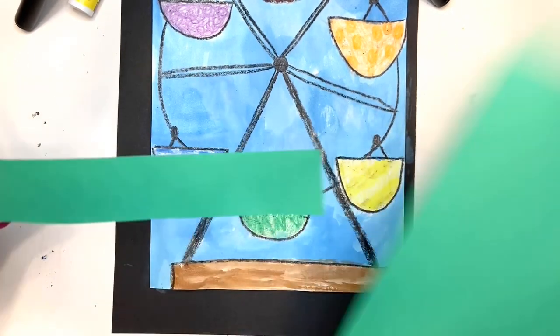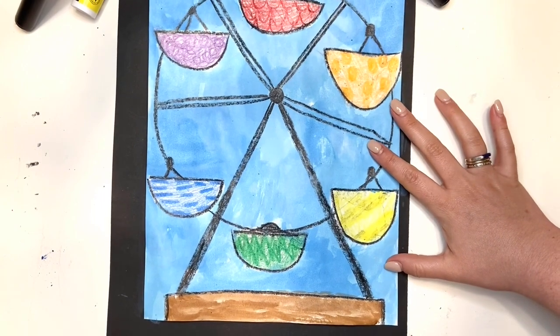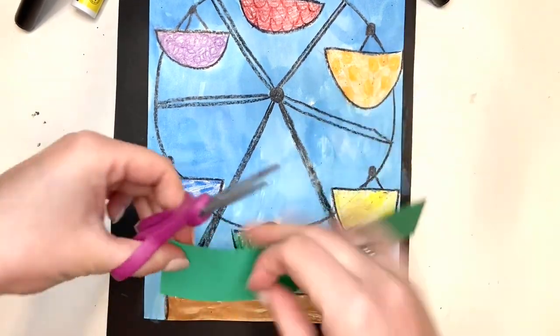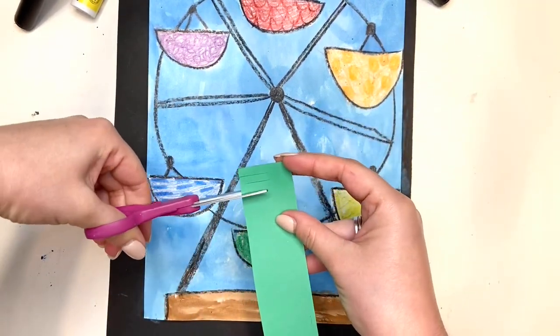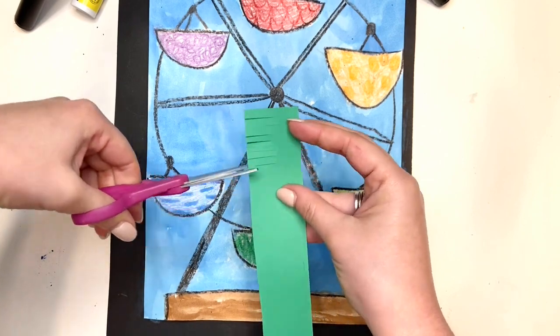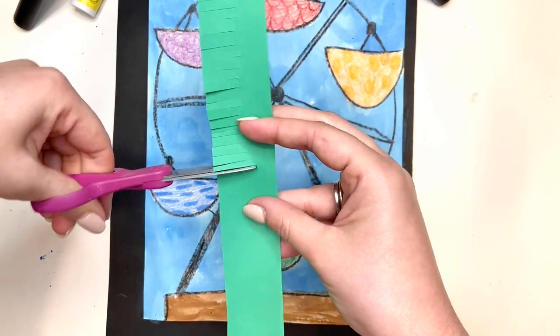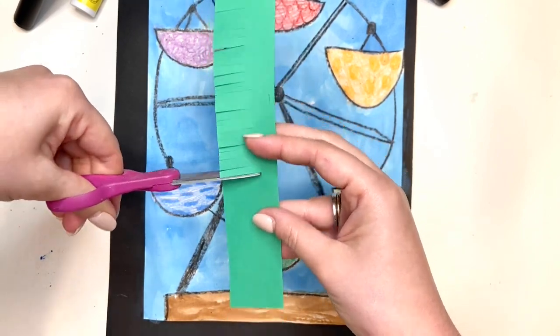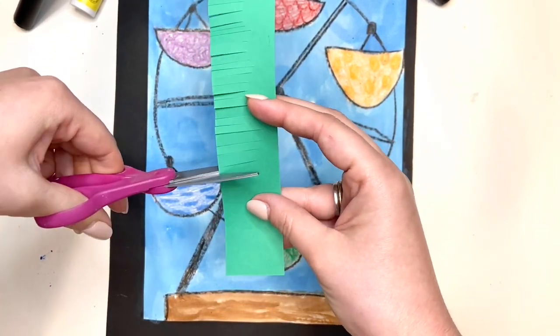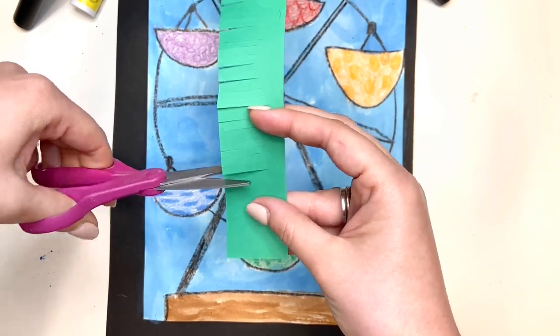And when I have a strip of green paper, I'm going to cut along the top to make little tiny blades of grass going all the way down. So as thin or as thick as you want, the thinner you get them, the more it's going to look like grass. But whatever you can do is just fine.